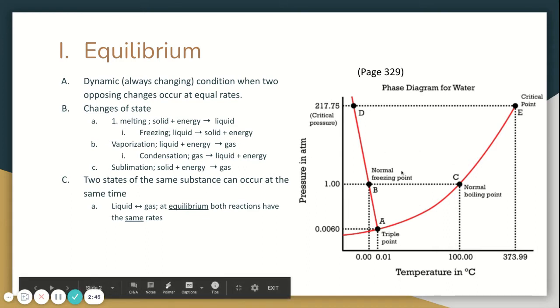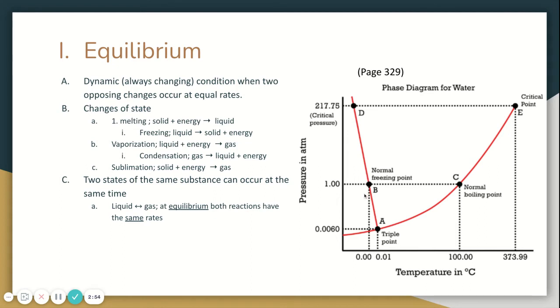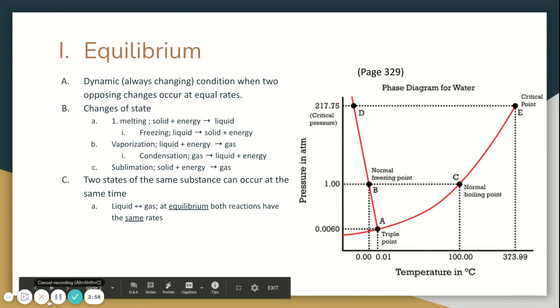I want to talk about this graph for a second. We call this a phase diagram. Specifically, this one is for water. This line right here that separates the solid, liquid, and gas—that line goes backwards.